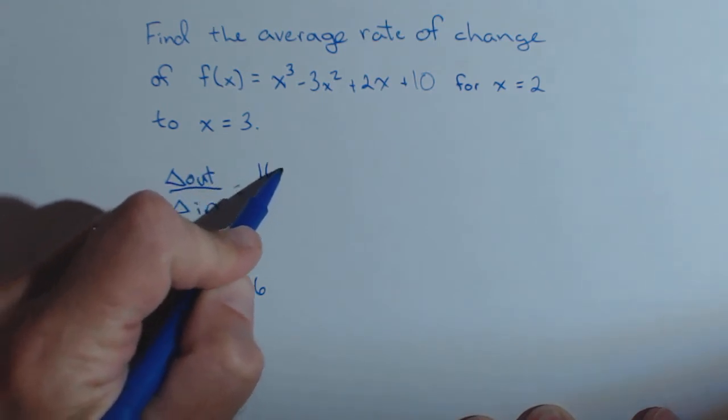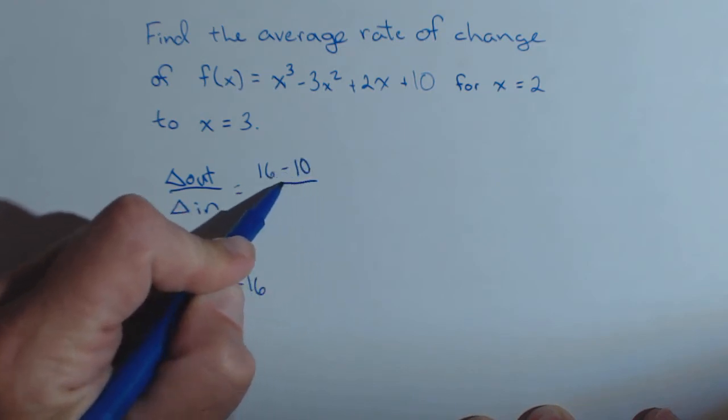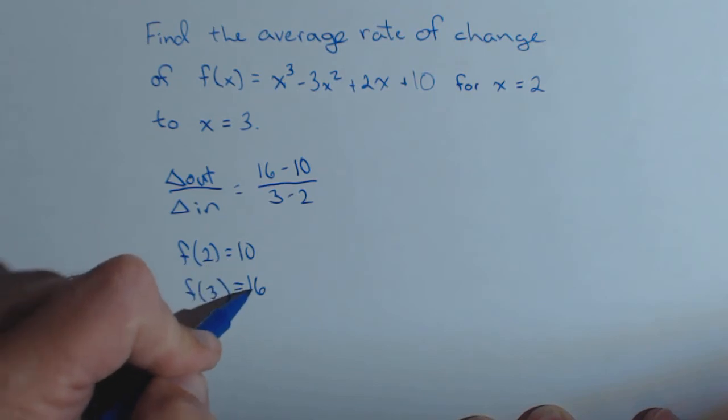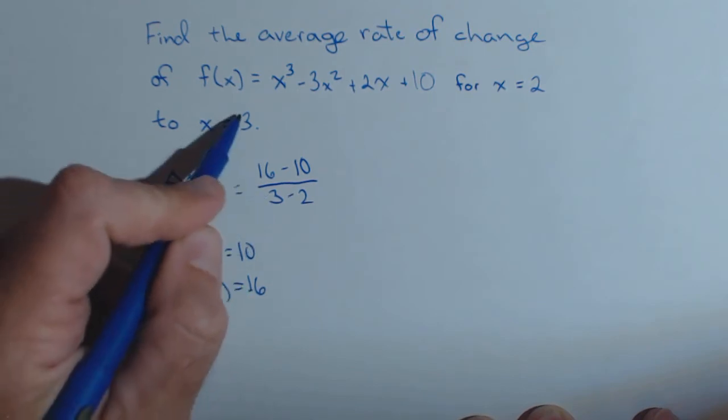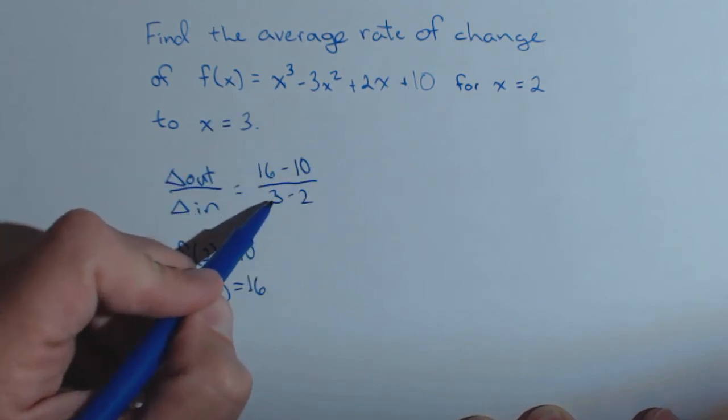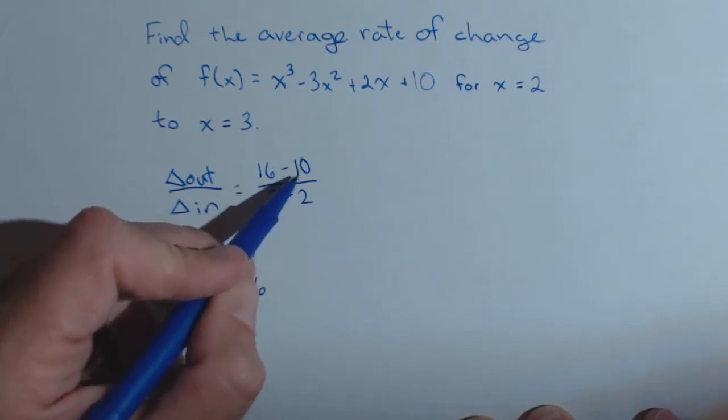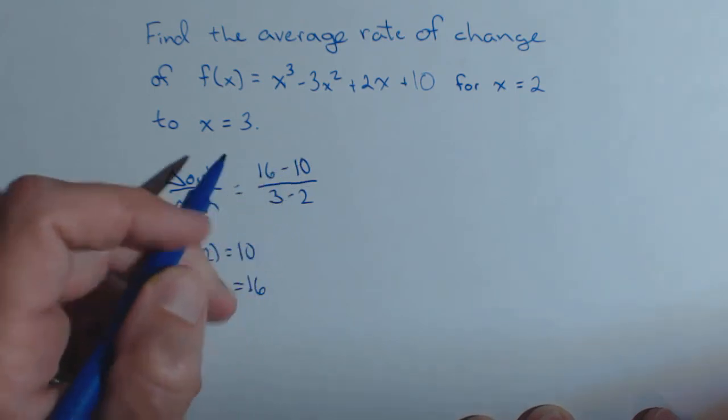So I could do 16 - 10 over 3 - 2. Notice on top I have the outputs, on bottom I have the inputs, and notice how they're lined up. 3 as an input gave us 16 as an output, 2 gave 10, and I find the change, that's why it's subtraction.